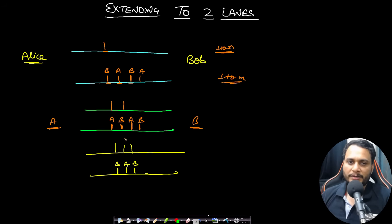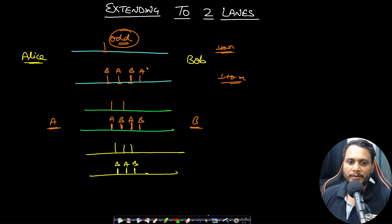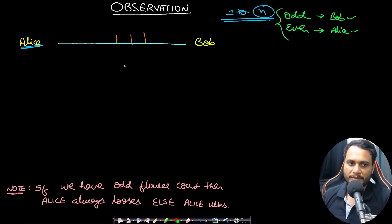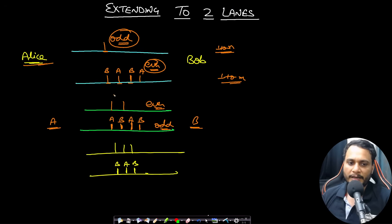The key observation is: if you have an odd count in the first lane, Alice wins when there is an even count in the second lane. And if you have an even count in the first lane, Alice wins when there is an odd count in the second lane. This is derived from the single-lane observation and extended to two lanes.